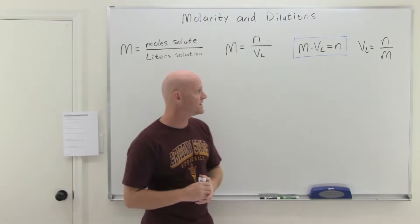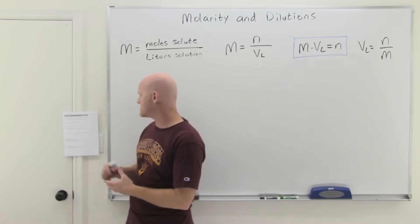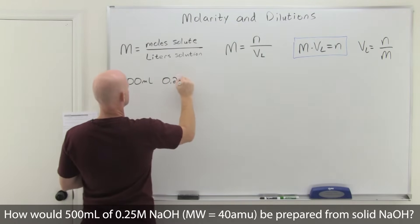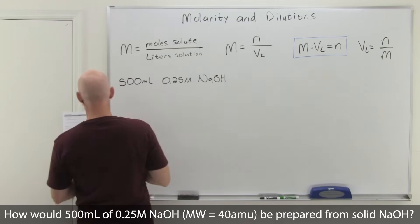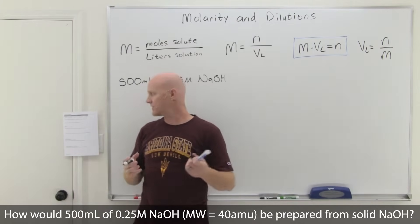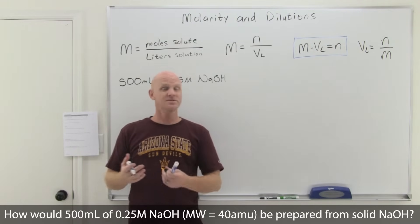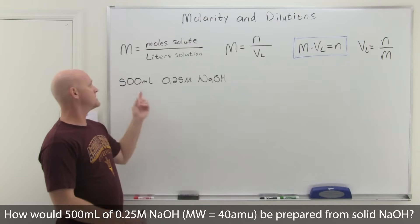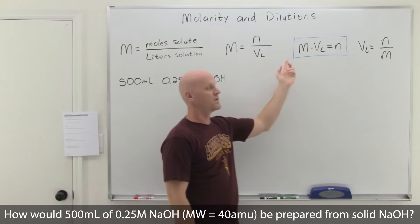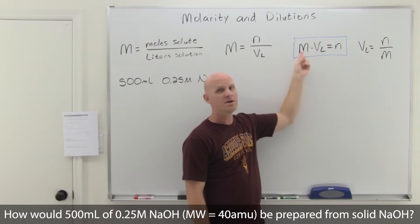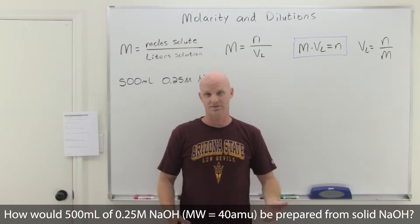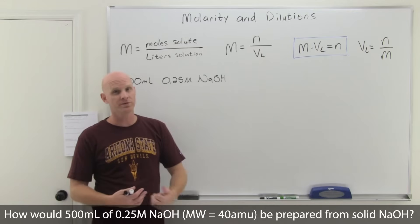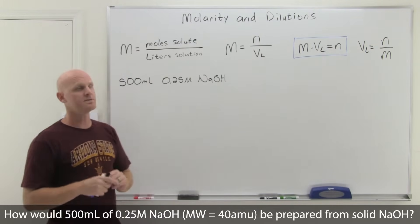Let's look at a couple of applications before talking about dilutions. The first question: how would 500 milliliters of 0.25 molar NaOH be prepared? The molar mass of NaOH is given as 40 grams per mole. You're given both the volume and the molarity, and if you're given both, you know the number of moles of the solute — in this case, NaOH. Since you can't measure out moles directly on a scale, once we find those moles, we can convert to grams using the molar mass.